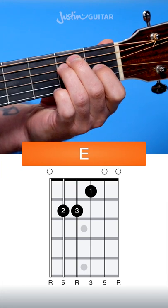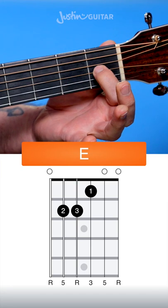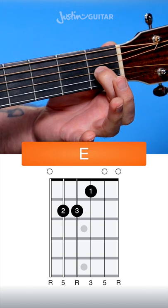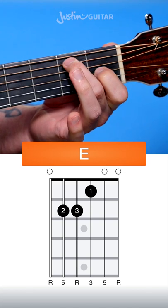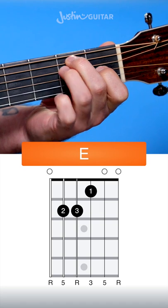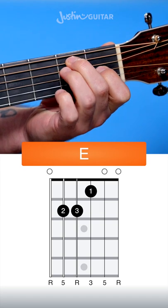Here's how to play an E chord on the guitar. We start with our first finger in the first fret of the third string. Second finger goes down second fret of the fifth string. Third finger goes underneath at second fret of the fourth string.